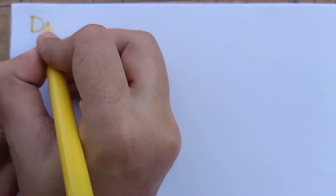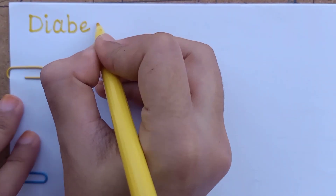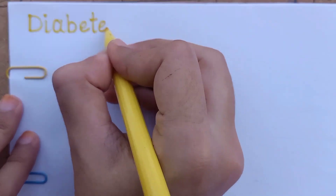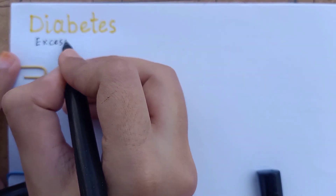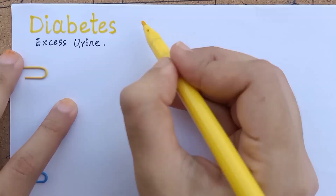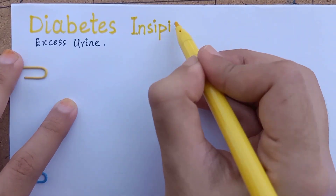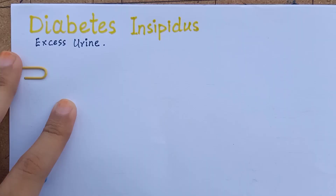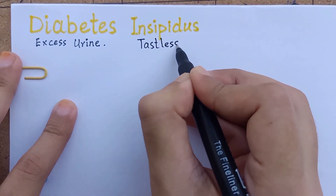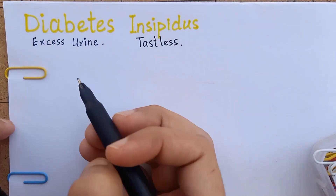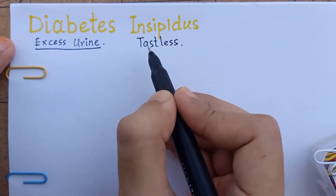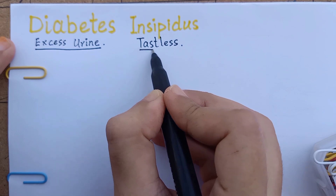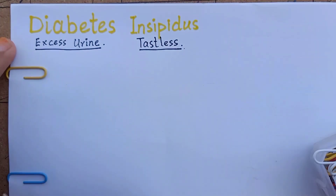In diabetes insipidus, 'diabetes' means excess urination while 'insipidus' means tasteless. So diabetes insipidus is the production of a large amount of tasteless urine. This distinguishes it from diabetes mellitus, which means production of a large amount of sweet urine.